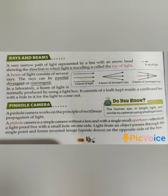Pin hole camera. A pin hole camera works on the principle of rectilinear propagation of light. This camera is a simple camera without a lens and with a single small aperture — effectively a light-proof box with a small hole on one side. Light from an object passes through this single point and forms an inverted image, meaning upside down, on the opposite side of the box.